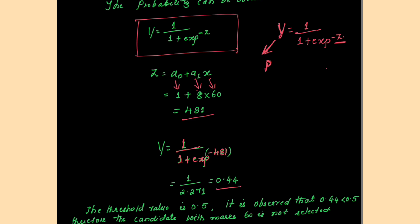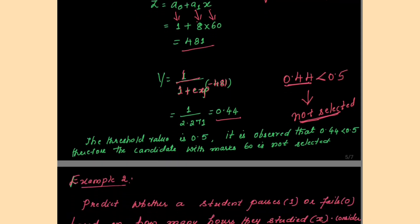Comparing 0.44 with the threshold value of 0.5: since 0.44 is less than 0.5, the logistic regression model classifies the output as 0 — that is, not selected. We have only two options here: selected or not selected. Since the probability value 0.44 is below the threshold, the student is classified as not selected.